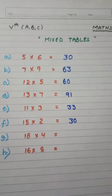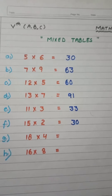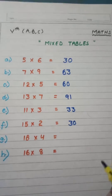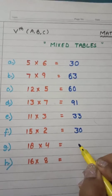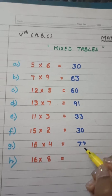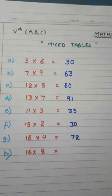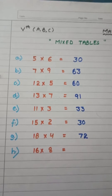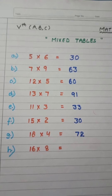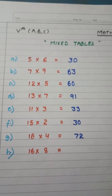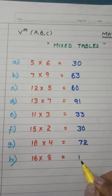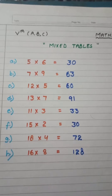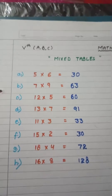Part F: fifteen twos are 30. Part G: eighteen fours are 72. Part H: sixteen eights are 128.